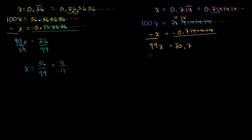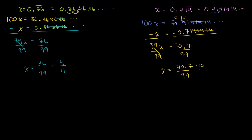We can divide both sides by 99. You can see something strange is happening because we still have a decimal in the numerator, but we can fix that up. Dividing both sides by 99 gives x is equal to 70.7 over 99. We haven't converted this into a pure fraction yet — we still have a decimal in the numerator. But that's easy to fix: multiply the numerator and denominator by 10 to get rid of the decimal. So we get 707 over 990.